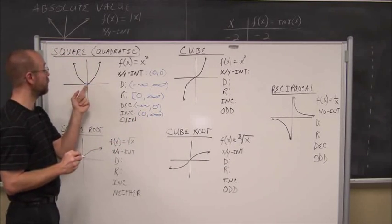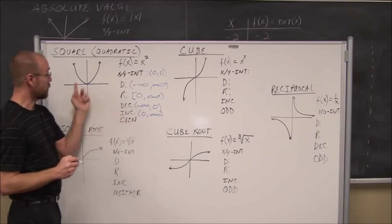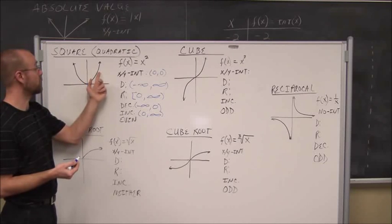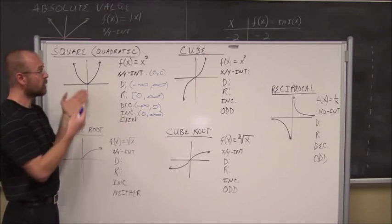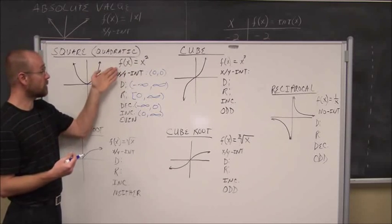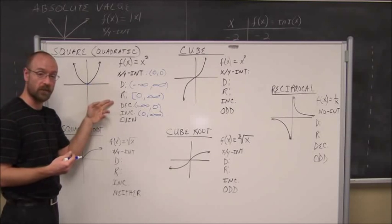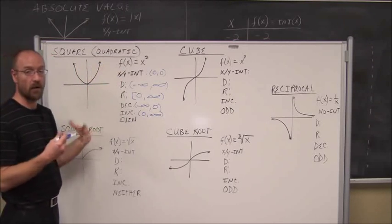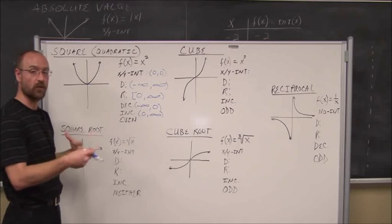At exactly 0, the function is neither increasing nor decreasing — that's our turning point. The square function is also an even function, because what we see on one side is mirrored on the other, symmetric with y. Understanding this library function helps with higher-order even polynomials like x to the fourth or x to the sixth, which share the same intercepts, domain, range, and intervals of increase and decrease.